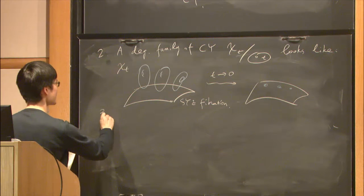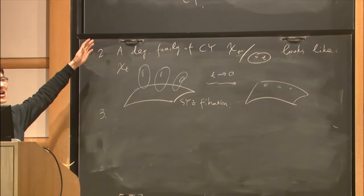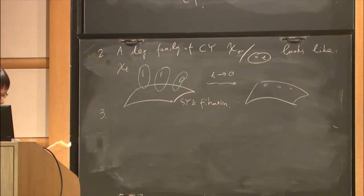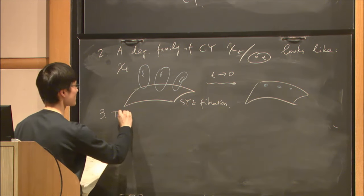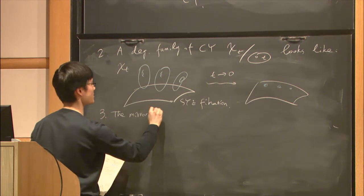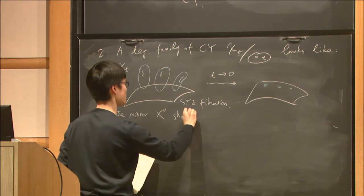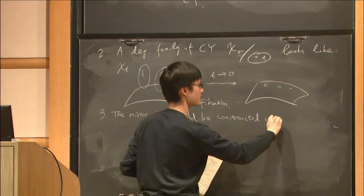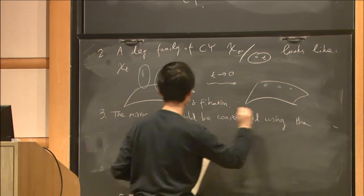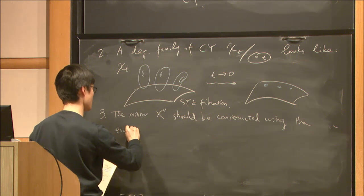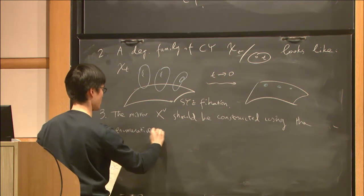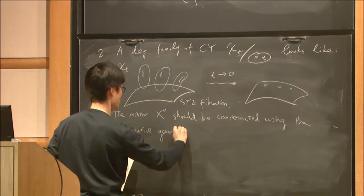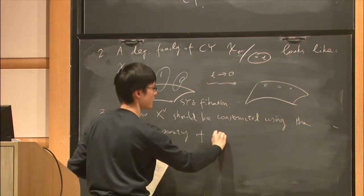Finally, the conjecture suggests how to build the mirror manifold. They say the mirror X-check should be constructed using the enumerative geometry of the SYZ fibration.